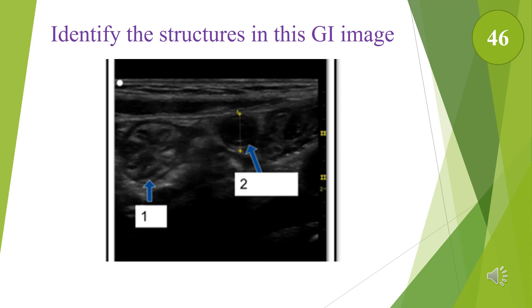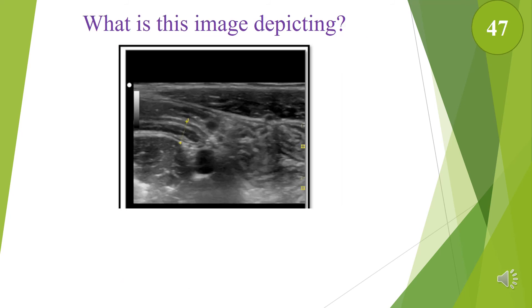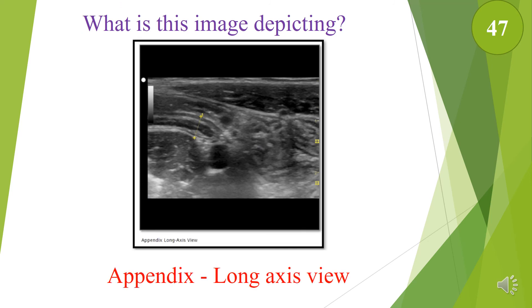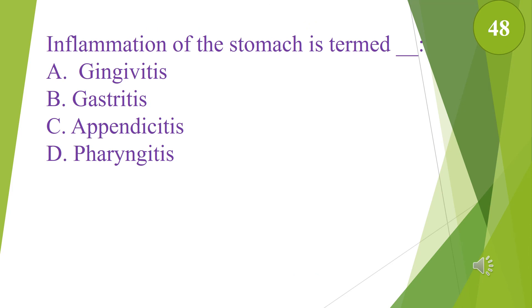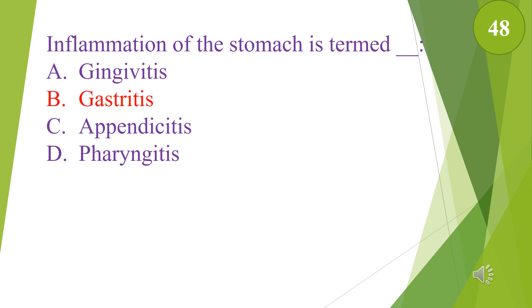Identify the structures in this image. Number one is the cecum and number two is the dilated appendix. What is this image depicting? This image shows a long axis view of the appendix. Inflammation of the stomach is termed: A. Gingivitis. B. Gastritis. C. Appendicitis. D. Pharyngitis. The answer is B, gastritis.